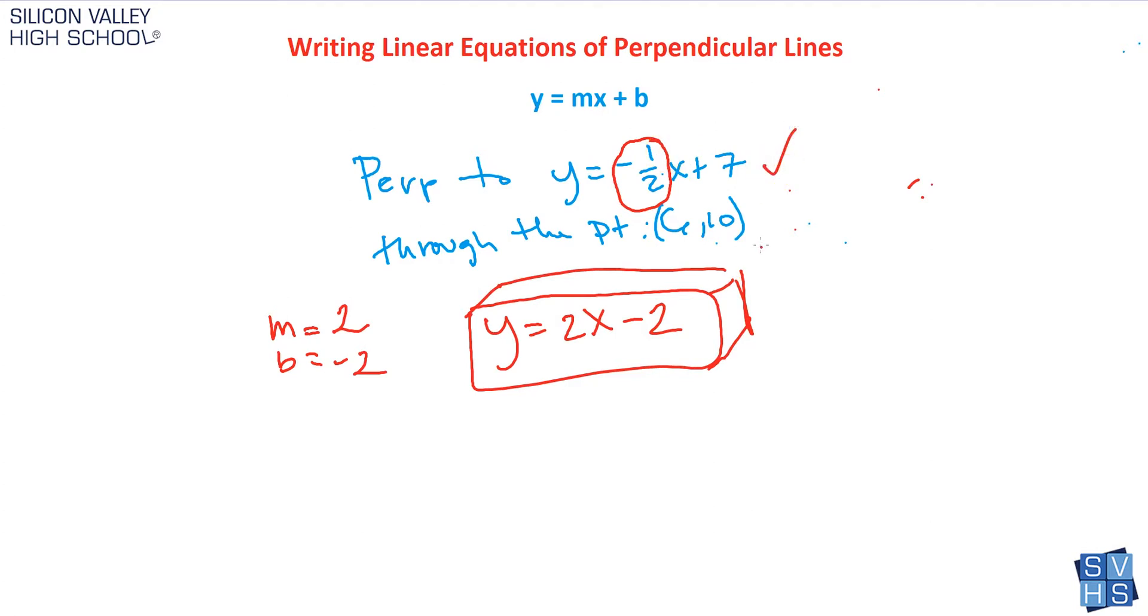So there is our linear equation for a line that is perpendicular to this guy, perp to him, and it goes through this point. So that was all we did. We stole his slope, flipped it, changed the sign, and then used our x and our y to solve for b.